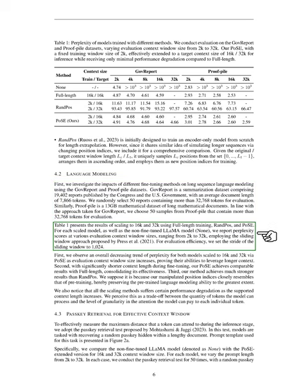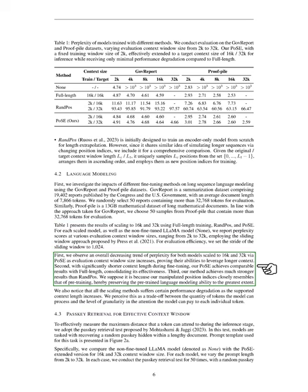We compared results scaling to 16K and 32K using three training methods — full-length training, RANDPOS, and PoSE — as well as the non-fine-tuned LLaMA model. We measured perplexity scores at evaluation context window sizes ranging from 2K to 32K using a sliding window approach, with a stride of 1,024 for evaluation efficiency. We observed a general decrease in perplexity for models scaled via PoSE as the evaluation context window size increased, suggesting these models can effectively leverage longer context.